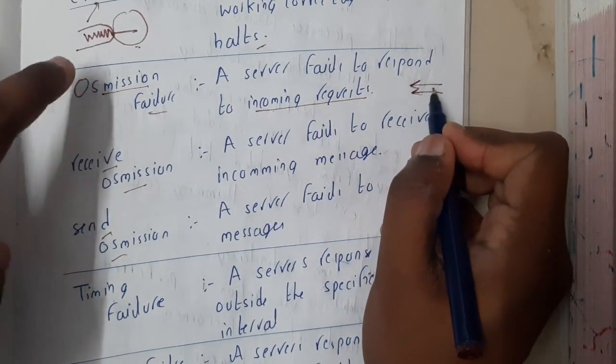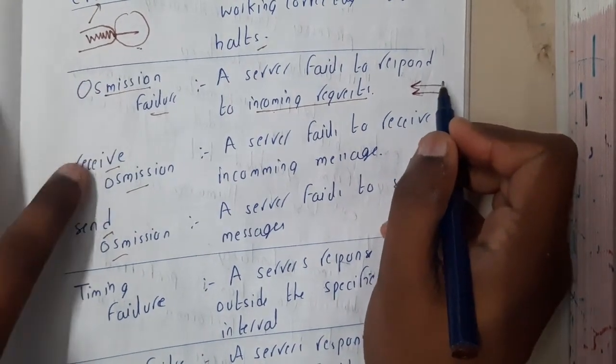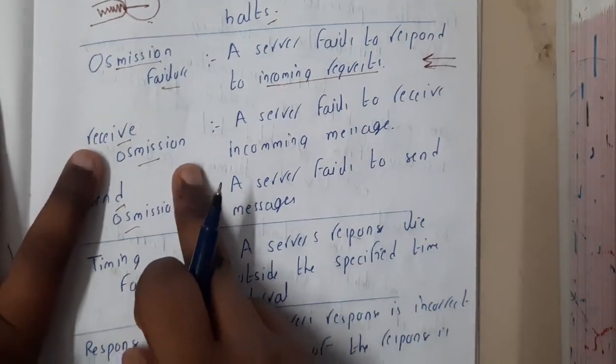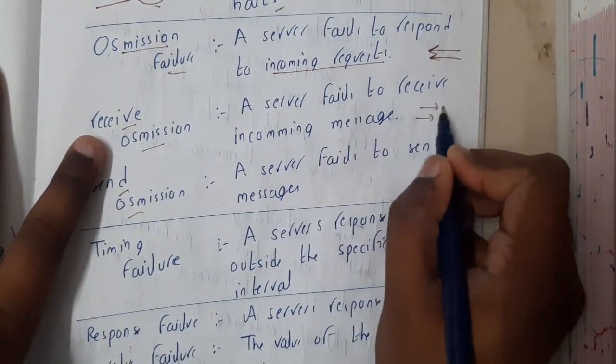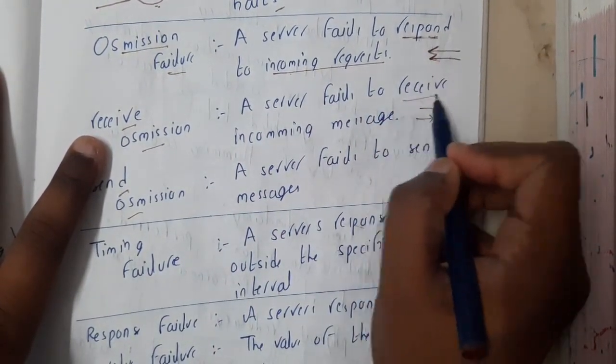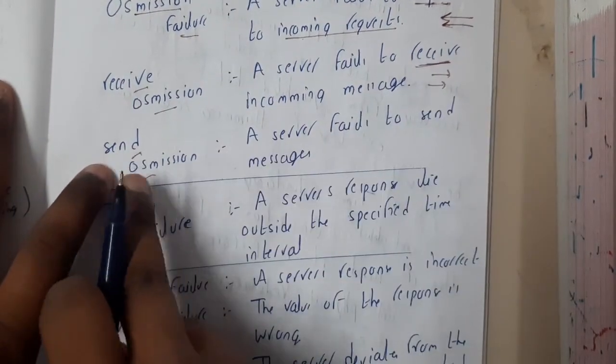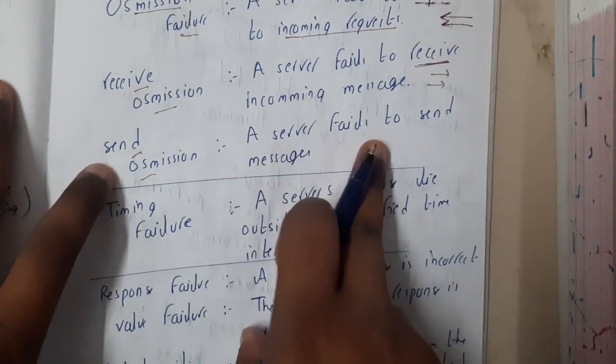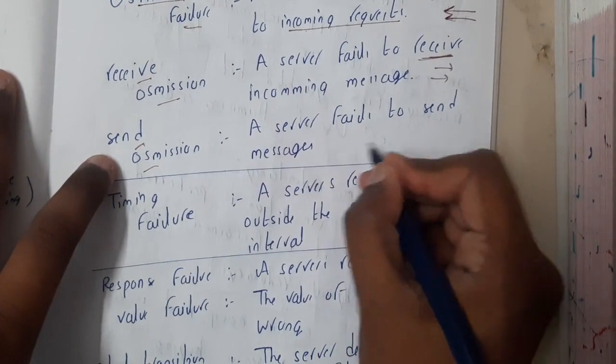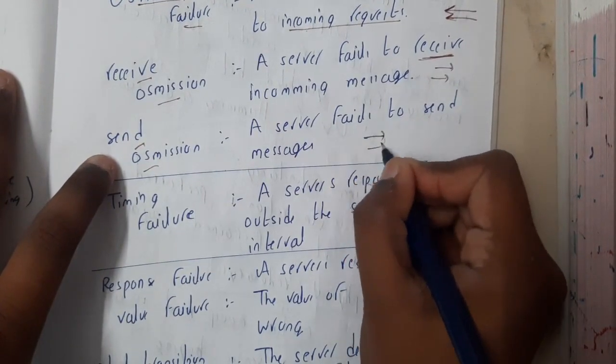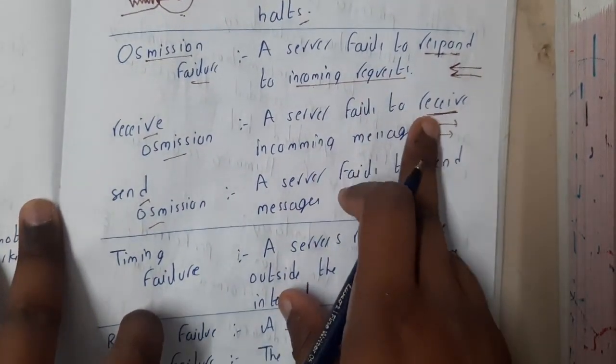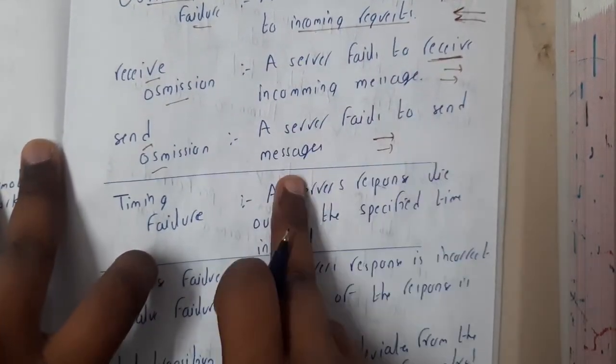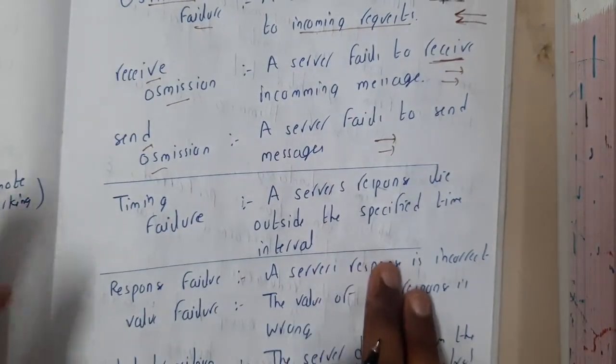Similarly, receive omission failure: a server fails to receive the incoming messages. Similarly, send omission: a server fails to send messages. So basically, here the server failed to send normal messages; here it is responding to incoming messages, receiving incoming messages, sending messages. There are three different types.